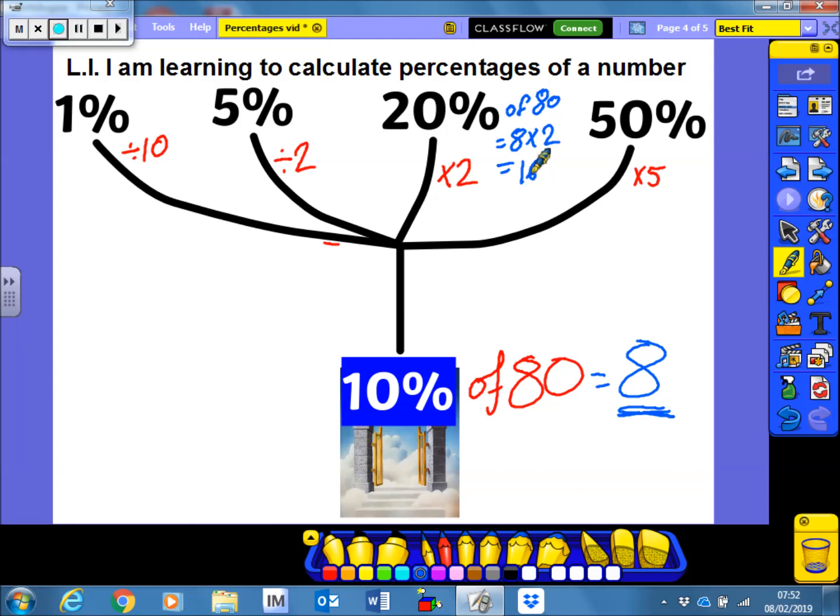If I want to work out 5%, I'm going to take that 8 and I'm going to divide it by 2. So 5% of 80 is 8 divided by 2, which is 4.